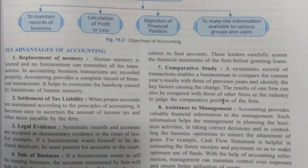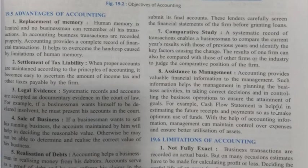Assistance to management: accounting provides valuable financial information to management. Such information helps management in planning business activities, taking correct decisions, and controlling business operations to ensure the attainment of goals. For example, a cash flow statement is helpful in estimating future receipts and payments so as to make optimum use of funds. With the help of accounting information, management can maintain control over expenses and ensure better utilization of assets.